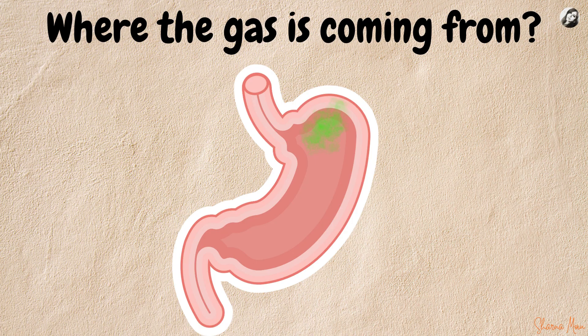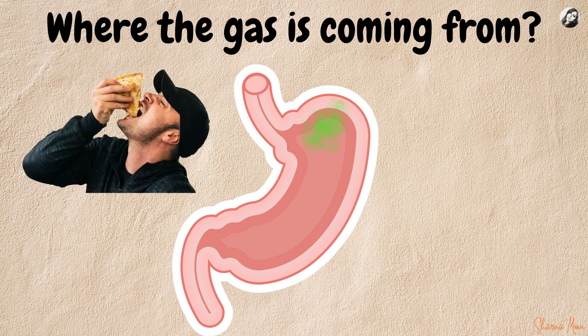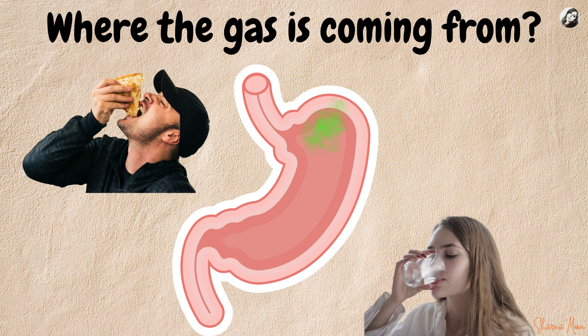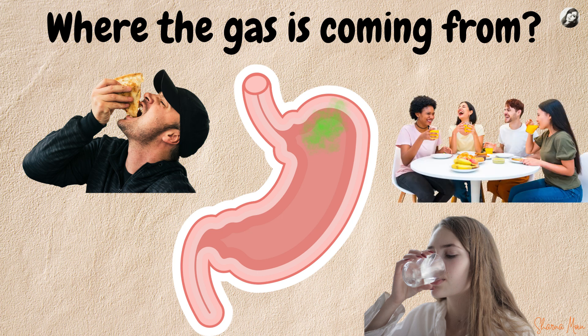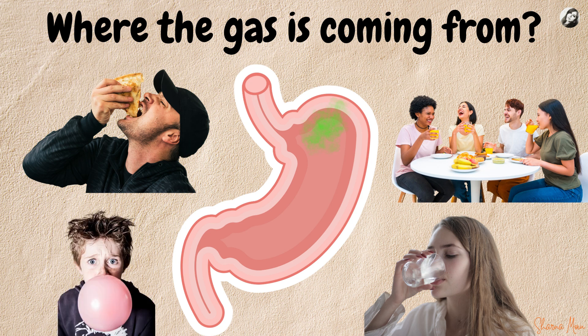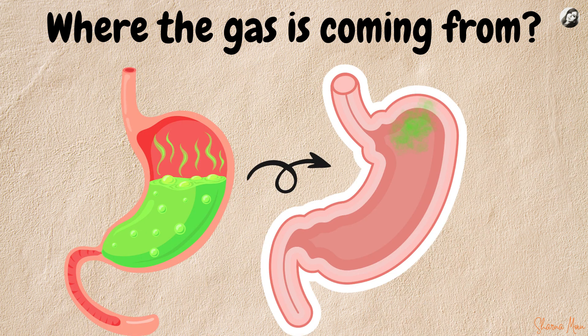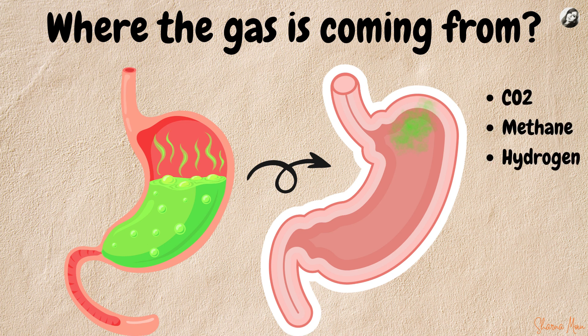Now you may have a question: where does this gas come from? This gas is actually aspirated into the stomach when we eat, drink, or swallow saliva. Additionally, activities such as talking while eating, drinking carbonated beverages, or chewing gum can increase the amount of air swallowed — this is the number one source of fundic gas. There is another source: the GI tract undergoes various chemical reactions during the digestion process, leading to the production of gases such as carbon dioxide, methane, and hydrogen. These gases accumulate in the fundus of the stomach as a byproduct of microbial fermentation of undigested carbohydrates or other food components.